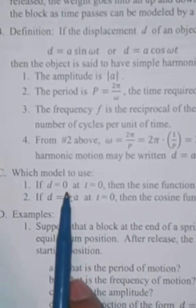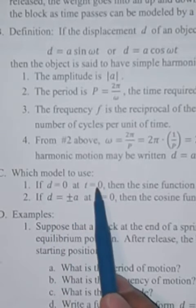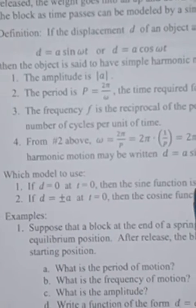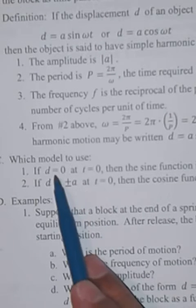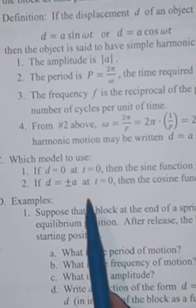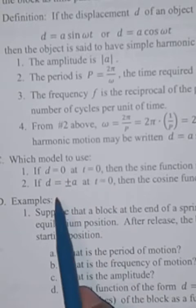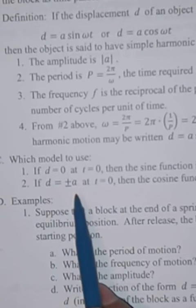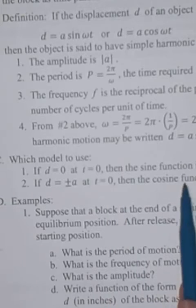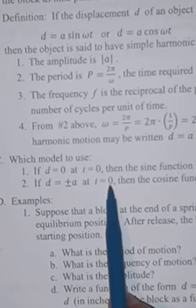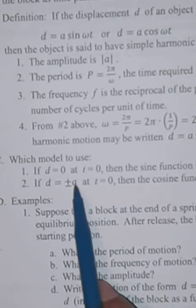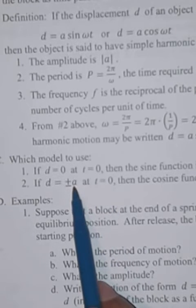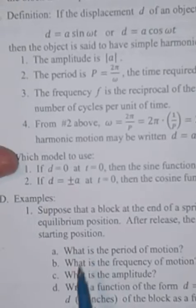Which model to use? That means do we use sine or cosine. So if d equals 0 at t equals 0, then the sine function is a good fit because sine of 0 is 0. If d equals plus or minus a at t equals 0, then the cosine function is a good fit to use. And that's because cosine of 0 is 1 or negative 1. And if we multiply by a, then it's a or negative a.